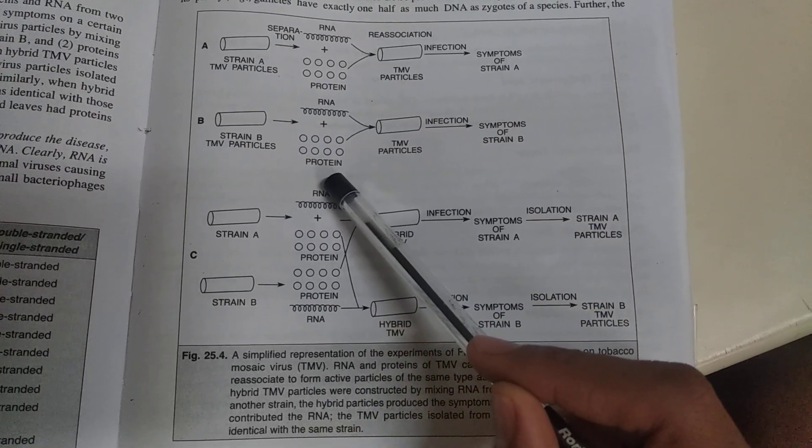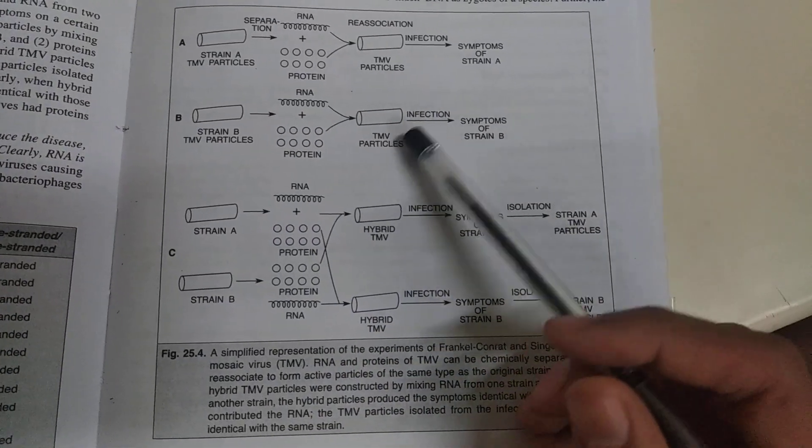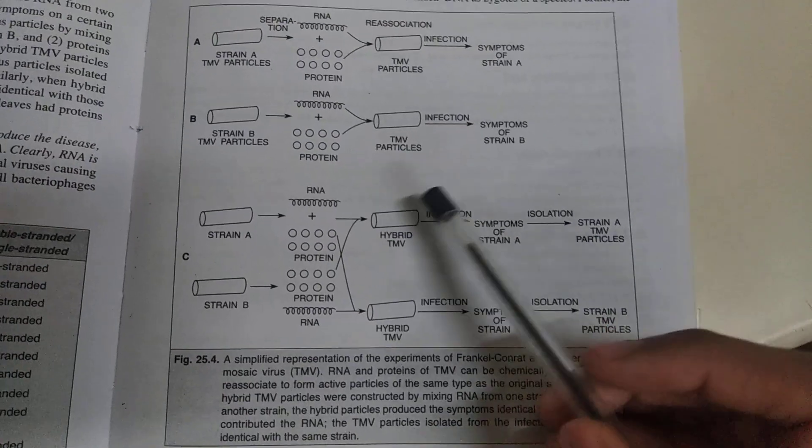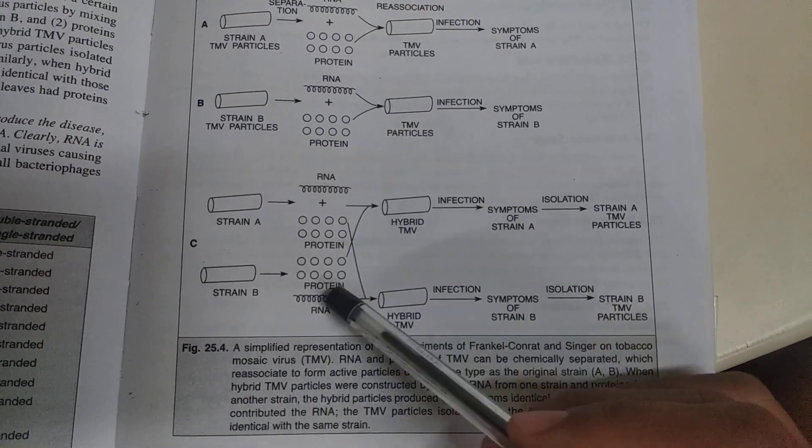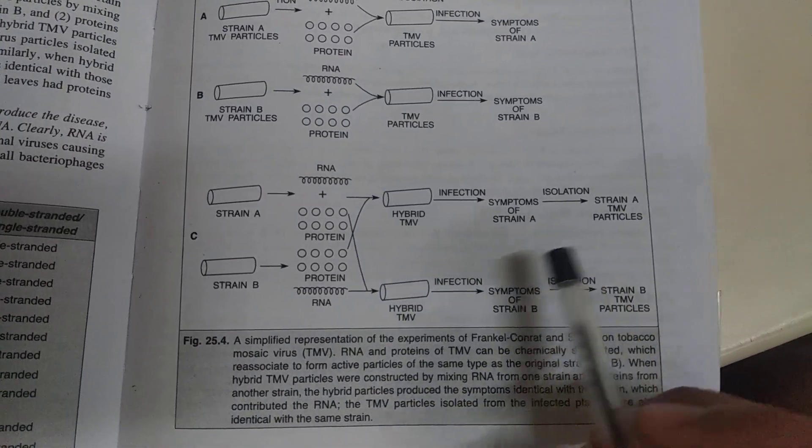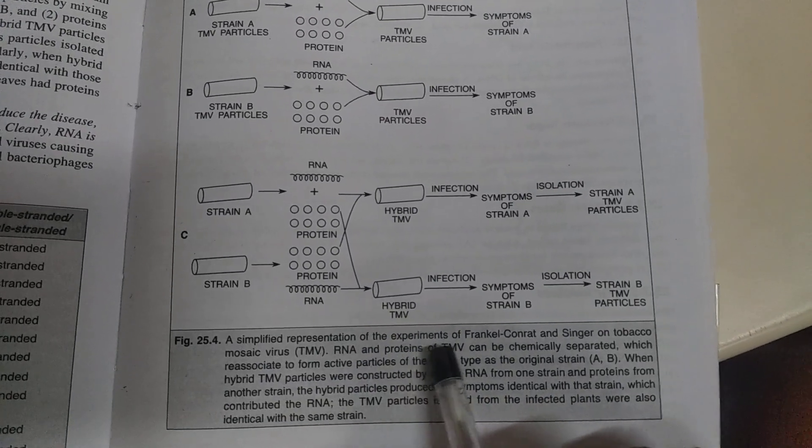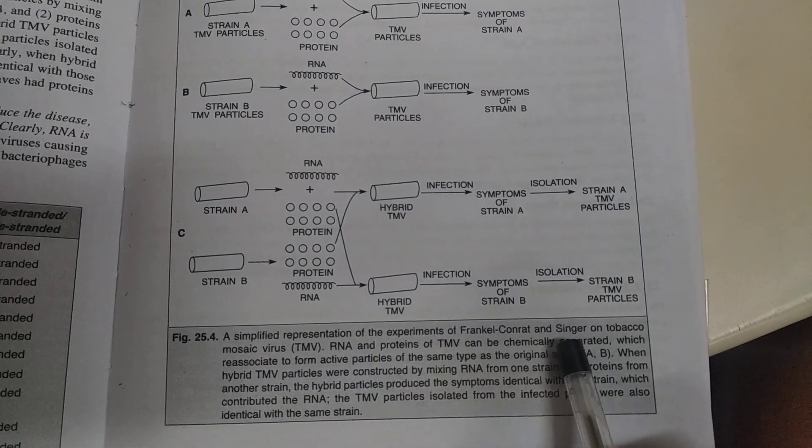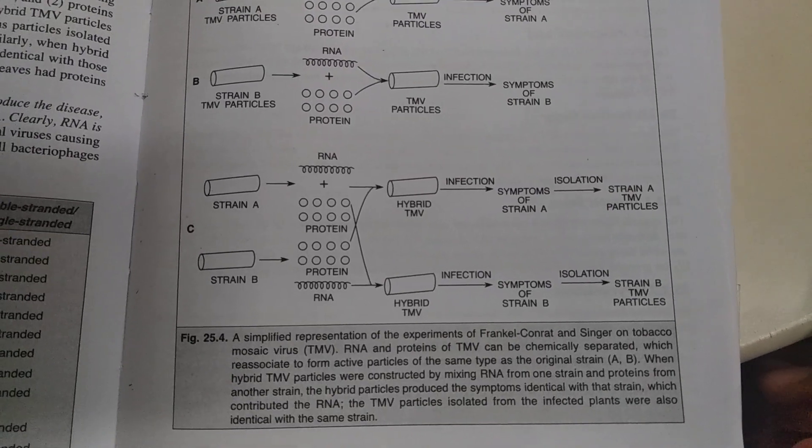We need to know which is the genetic material for transfer of hereditary material from one generation to another. By this experiment we can say that RNA is the genetic material, not the protein. With this simple experiment, Frankel, Conrad and Singer demonstrated that RNA is the genetic material.